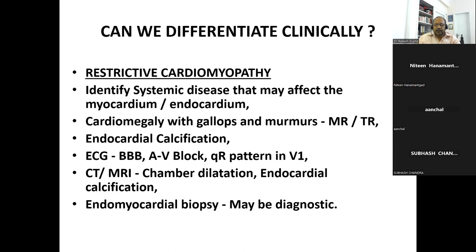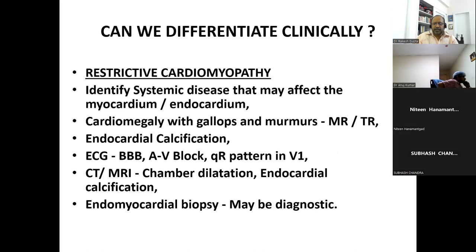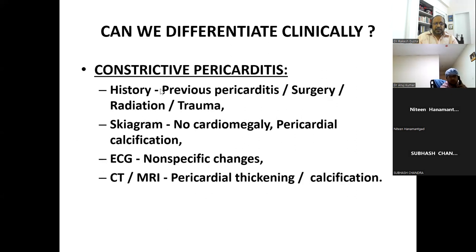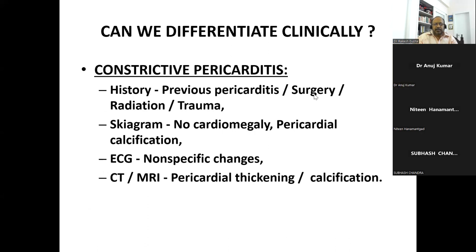It also gives us prognostic information. In restrictive cardiomyopathy, prognosis is extremely poor, while prognosis is very good in constrictive pericarditis if treated. In restrictive cardiomyopathy, these patients end up in stage 4 heart failure. For constrictive pericarditis: identify history of tuberculosis (very important in our country), previous pericarditis, surgery, radiation, and trauma — many patients are coming with post-radiation constrictive pericarditis. On X-ray: no cardiomegaly but pericardial calcification. ECG is non-specific. CT and echo help with diagnosis.